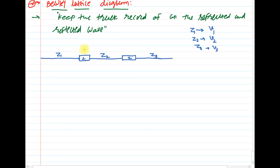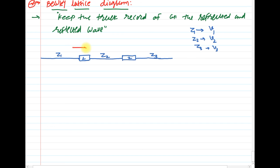We will indicate the reflection and refraction coefficients using different colors. Red is used for refraction, and the arrows show the direction of the wave — where it gets refracted or reflected from Junction 1 and Junction 2.